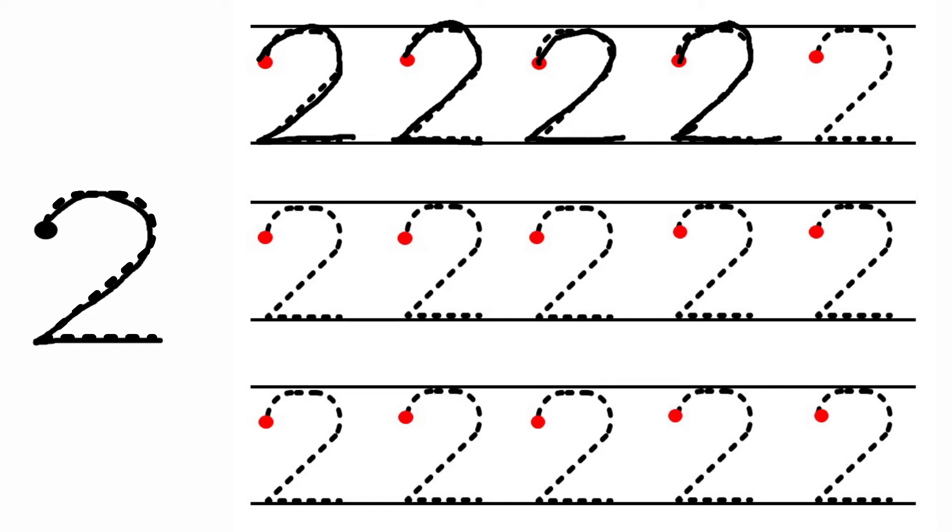Like this we are going to trace the number 2. Starting from red dot, we are going to draw a curve, then sleeping line. So we got number 2. Like this we are going to trace everything.